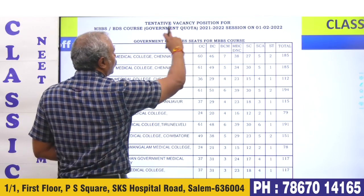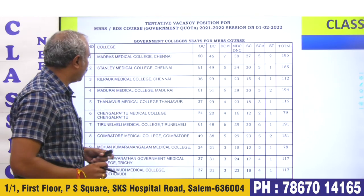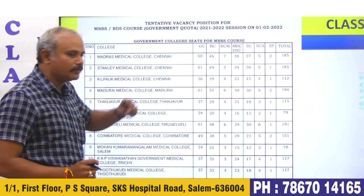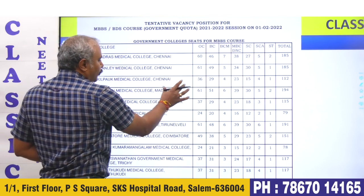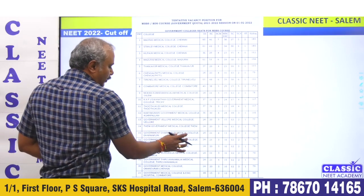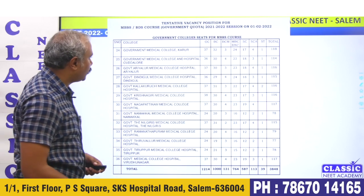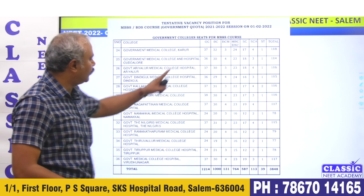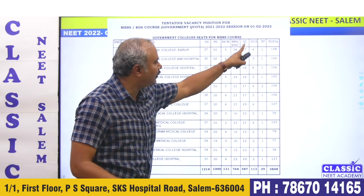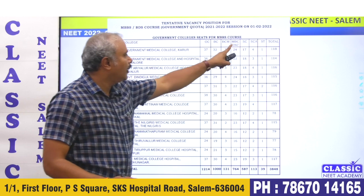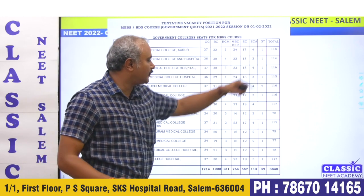So, in 2021-2022, you have a total vacancy position. College-wise, we will see the total number of seats: OC, BC, BCM, MBC, DNC, MBC, SC, SEA, ST. You can see that.